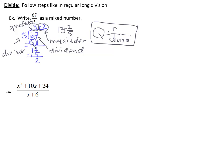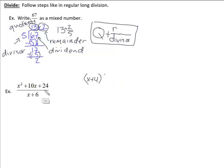Let's apply this algorithm to polynomial long division. If you look at this quadratic x squared plus 10x plus 24, you might recognize it's factorable. The factors of 24 that add up to 10 — same signs, both positive — are x plus 4 and x plus 6. So I'm asking you to divide by one of those factors, x plus 6. My other answer should be x plus 4 when we're done.